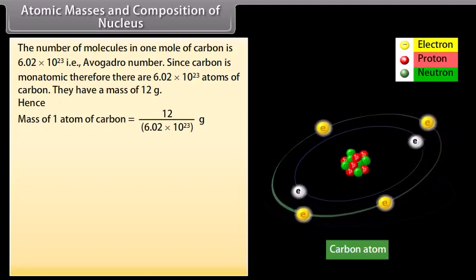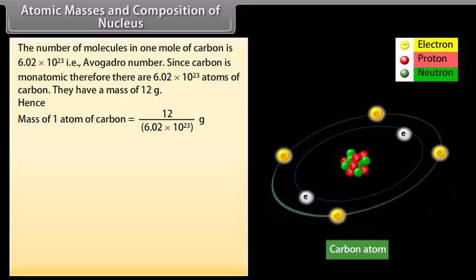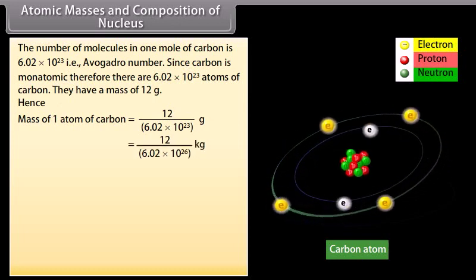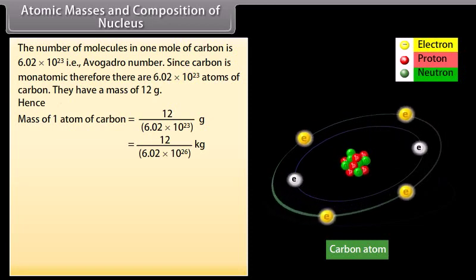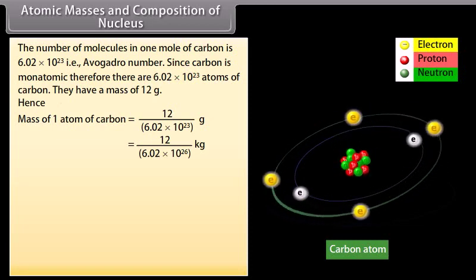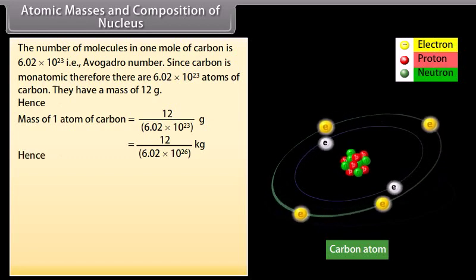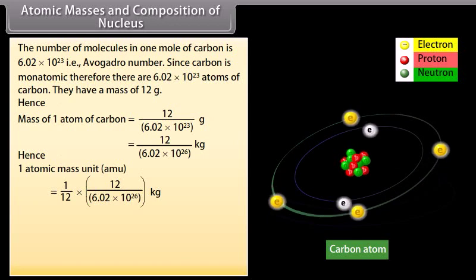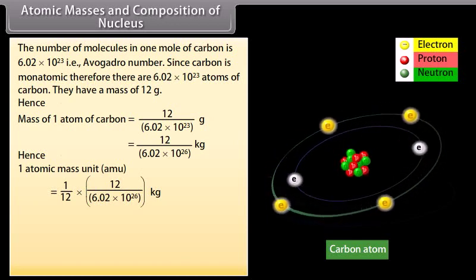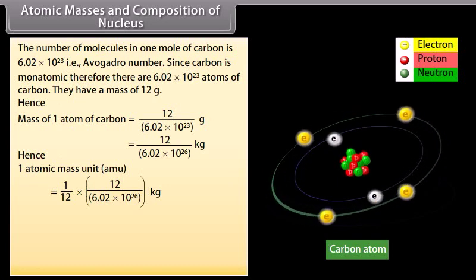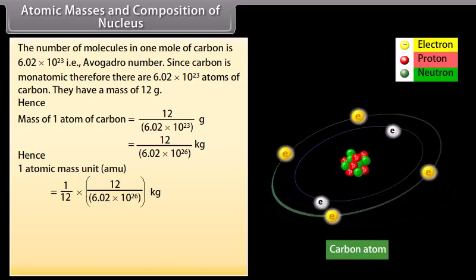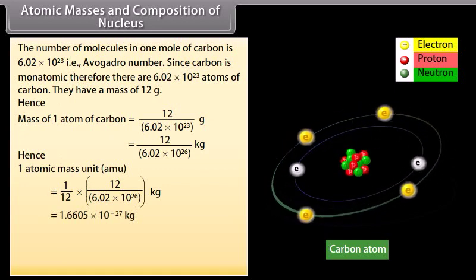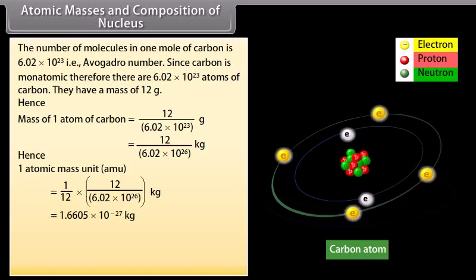Hence, mass of 1 atom of carbon is equal to 12 by 6.02 into 10 raised to the power of 23 gram, which is equal to 12 by 6.02 into 10 raised to the power of 26 kilogram. Hence, 1 atomic mass unit is equal to 1 by 12 into 12 by 6.02 into 10 raised to the power of 26 kilogram, which is equal to 1.6605 into 10 raised to the power minus 27 kilogram.